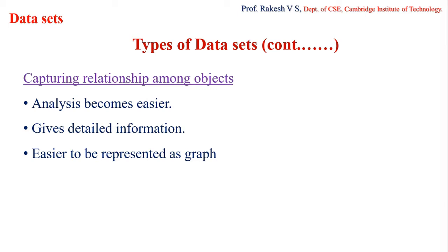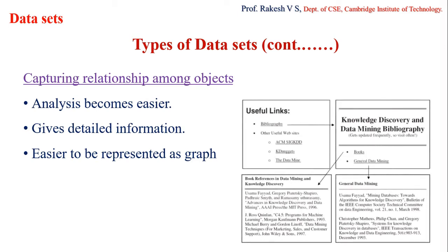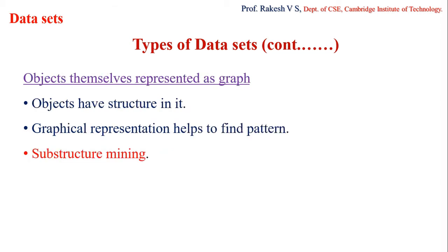As an example of graph-based data with relationships, consider web pages. Each web page is treated as a node, and the hyperlinks present in each page are the relationships — because a hyperlink gives more detailed information than what is present in the current page. This illustrates the relationship-among-objects case.